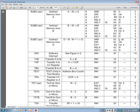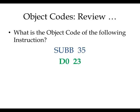We know the object code for the opcode is D0. Now, how do we get 23? The first part, D0, comes from the opcode. The second part, 23, comes from the operand, which is 35 in the instruction. Looking at 35 — there is no dollar sign, so this is decimal. When writing object code we always write in hex, so 23 is the hexadecimal equivalent of decimal 35.